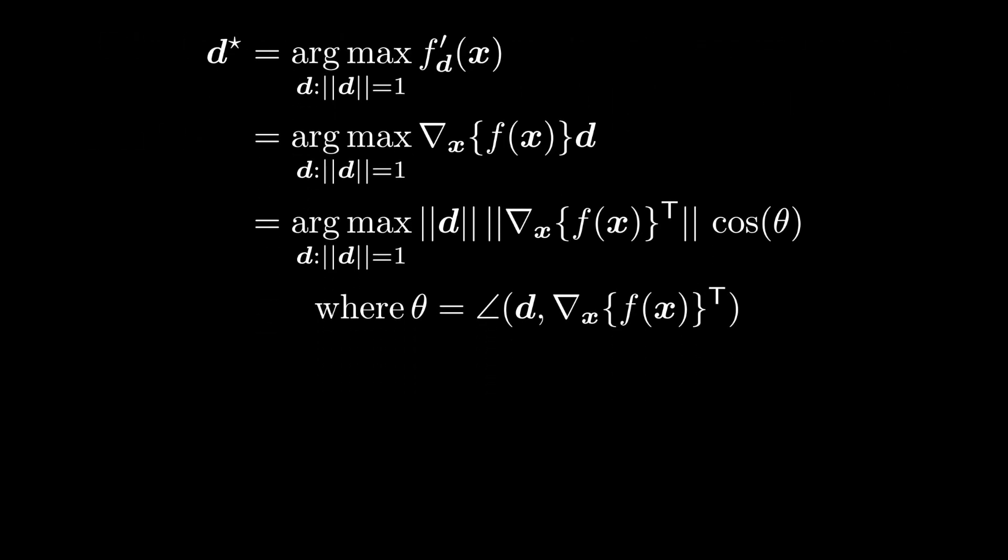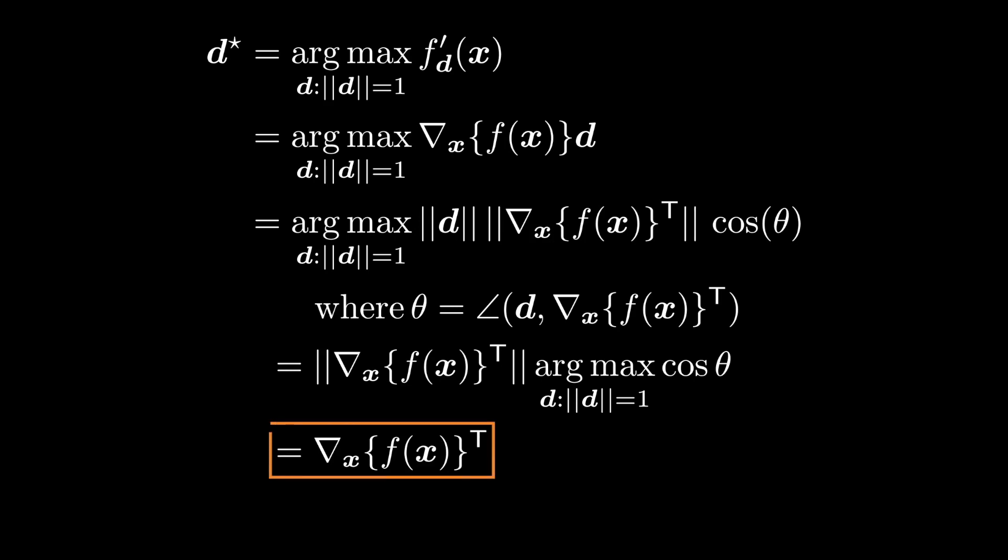Now of course the magnitude of d is 1 by construction, and the magnitude of the gradient doesn't depend on d. Cosine theta will be maximized at theta equals 0, and then it will equal 1. And theta will equal 0 if d points in the direction of the gradient. So the direction of steepest ascent is the unit vector that points in the same direction as the gradient.